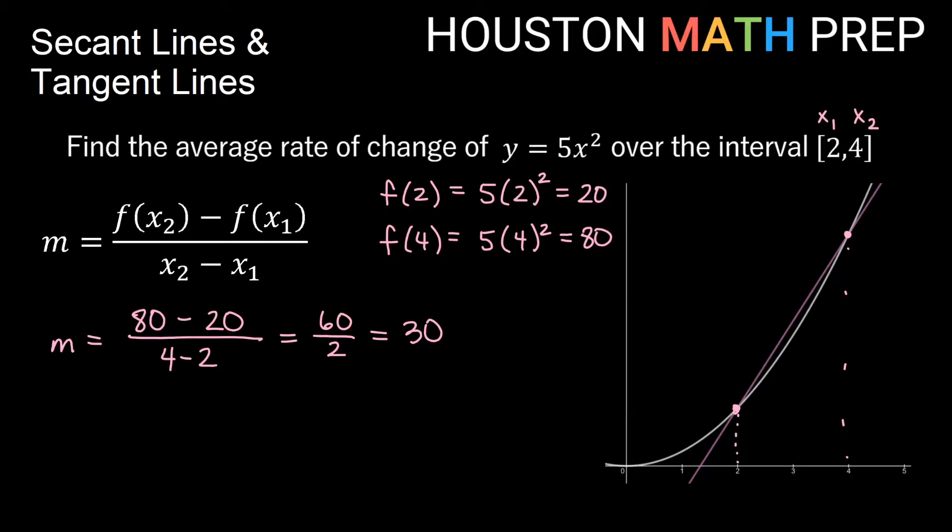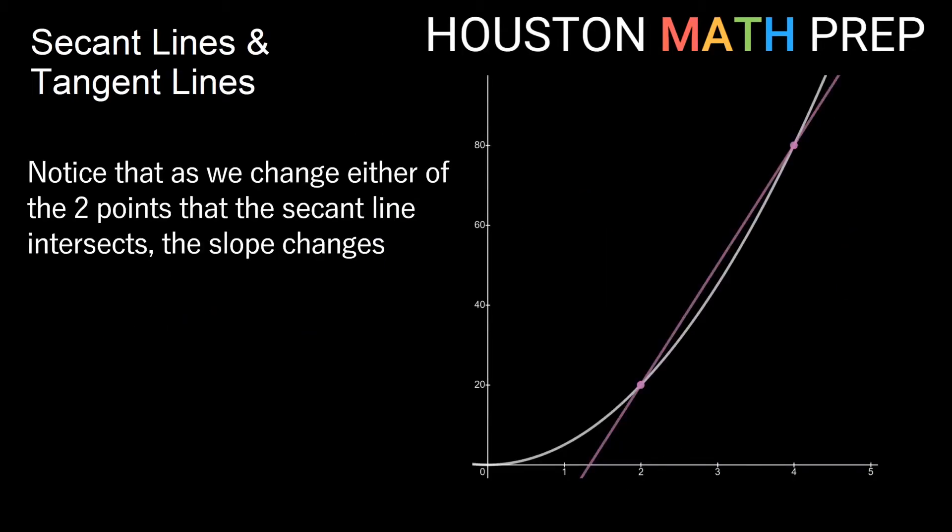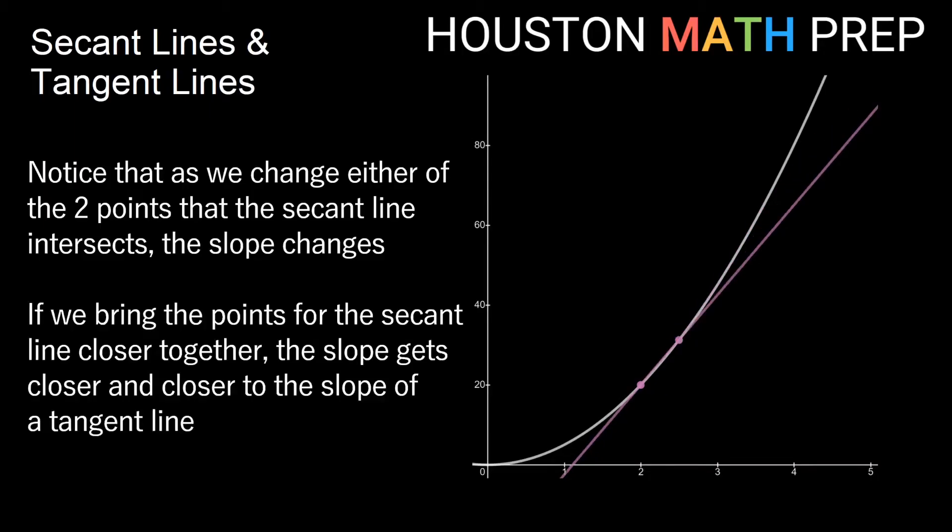What we want to notice is that the slope of a secant line is going to depend on which points we choose. You'll notice as we change either of the two points that the secant line intersects, the slope of the secant line is going to change. If you bring the points closer and closer together, then the slope of this secant line is actually going to get closer and closer to the slope of what we call a tangent line.